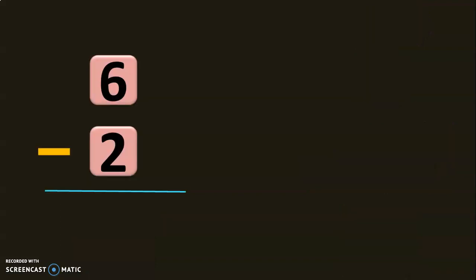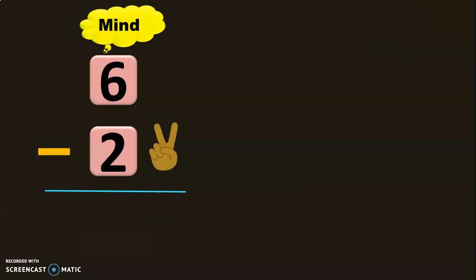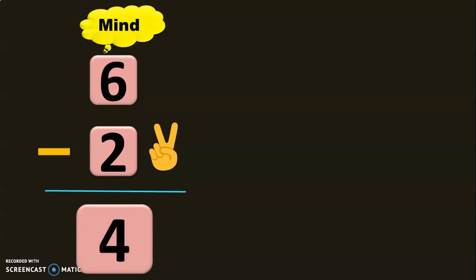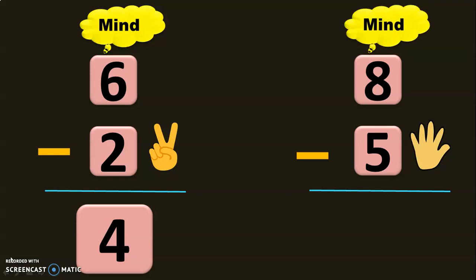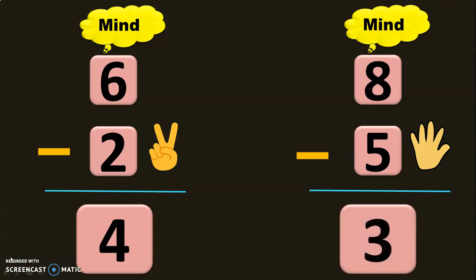Let us do the next sum: 6 minus 2. 6 in the mind, 2 in the fingers. Before 6: 5, 4. Let us do another sum: 8 minus 5. 8 in the mind, 5 in the fingers. Before 8: 7, 6, 5, 4, 3. So the difference is 3.